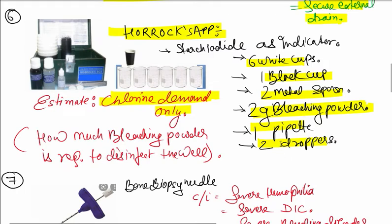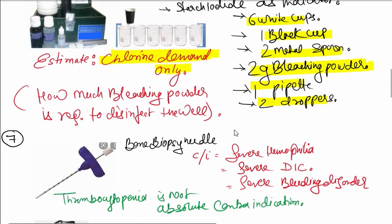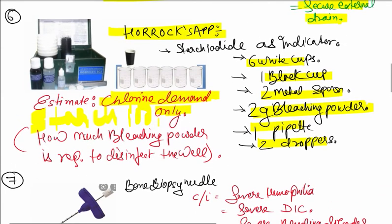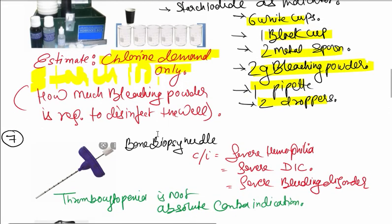Starch iodide is used as an indicator. This is for chlorine demand calculation, and in a well, how much bleaching powder is required.